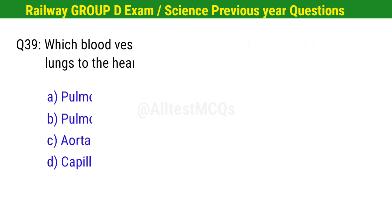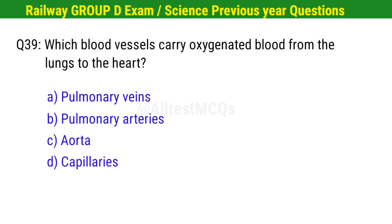Question No. 39. Which blood vessels carry oxygenated blood from the lungs to the heart? Right option is A. Pulmonary veins.